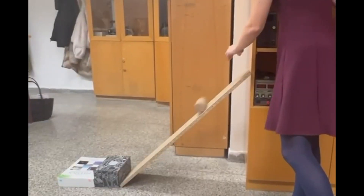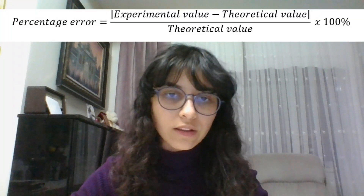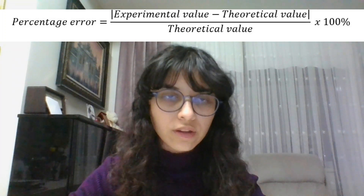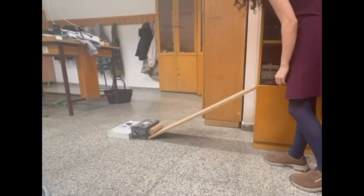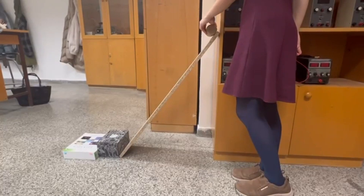Let's start with the height of 0.5 meters. The instantaneous speed obtained with the slope in the program Tracker is 1.4 meters per second. The theoretical result obtained by the formula is 2.56 meters per second. By subtracting the experimental value from the theoretical value and dividing it by the theoretical value, this value is multiplied by 100 and the percentage error obtained is 45.2 percent. This is also repeated for the other four heights, which are 0.6, 0.7, 0.8, and 0.9 meters.